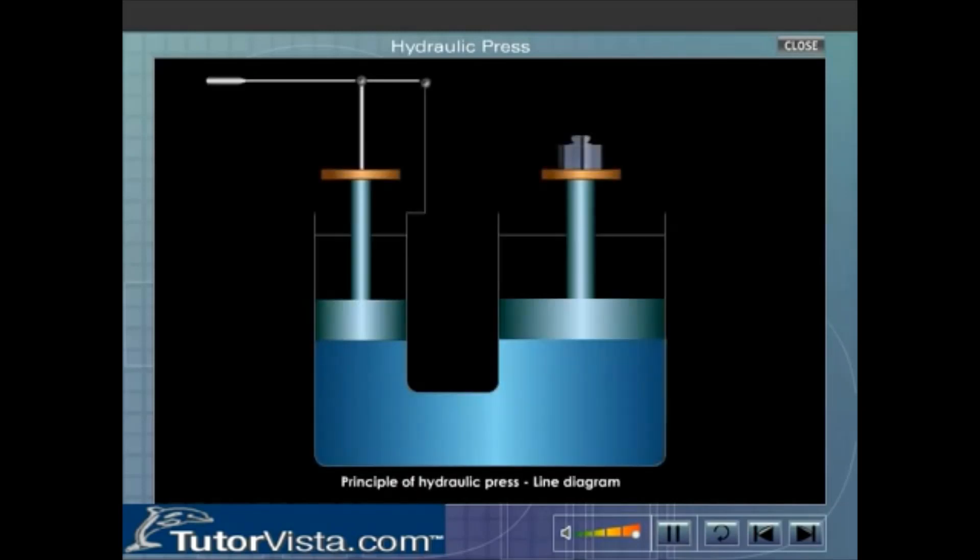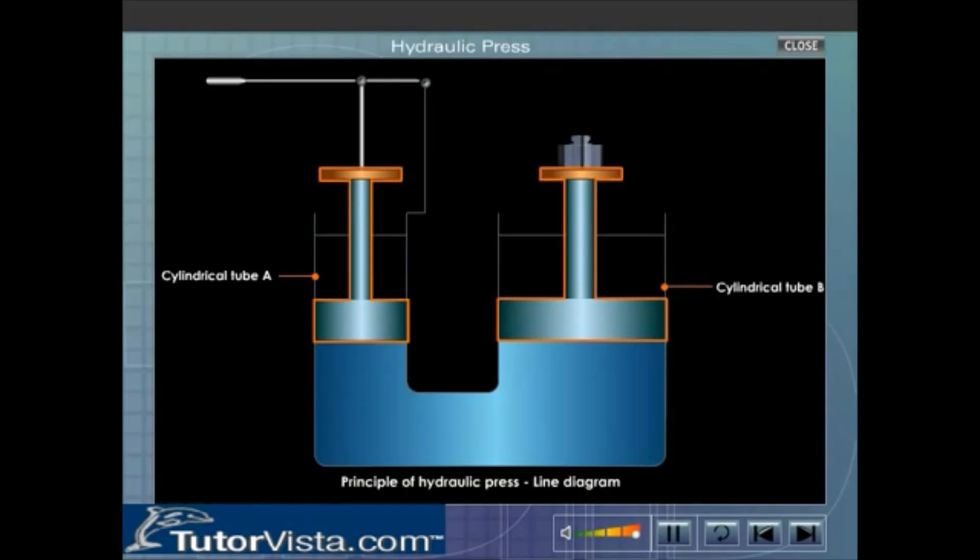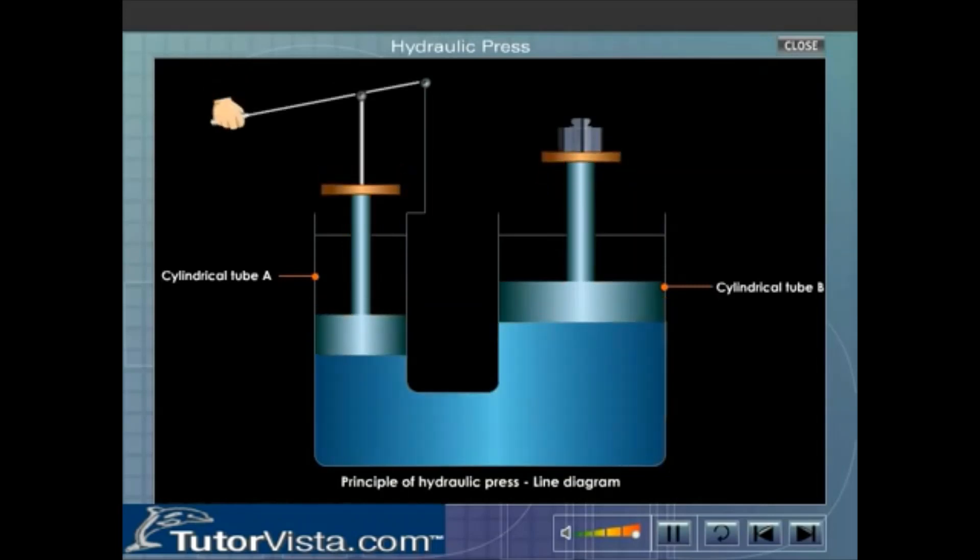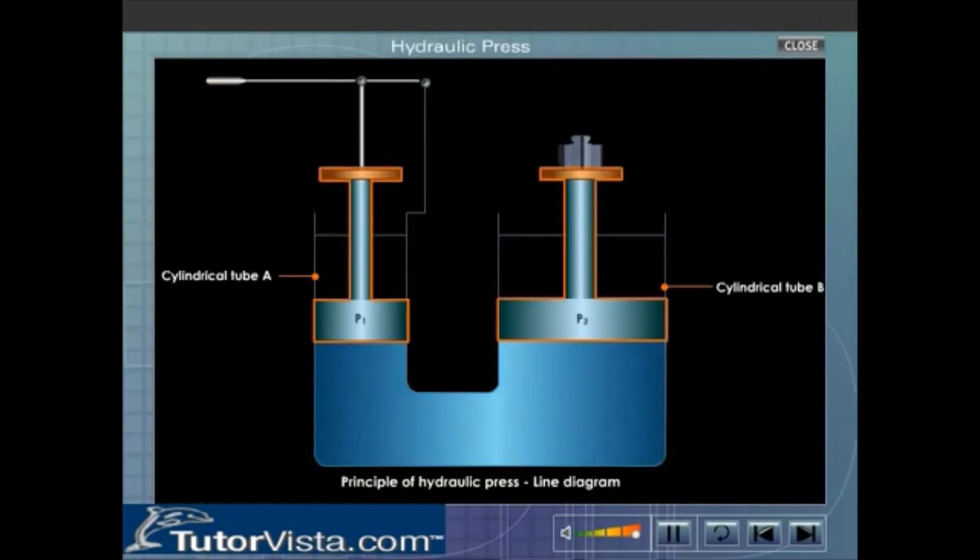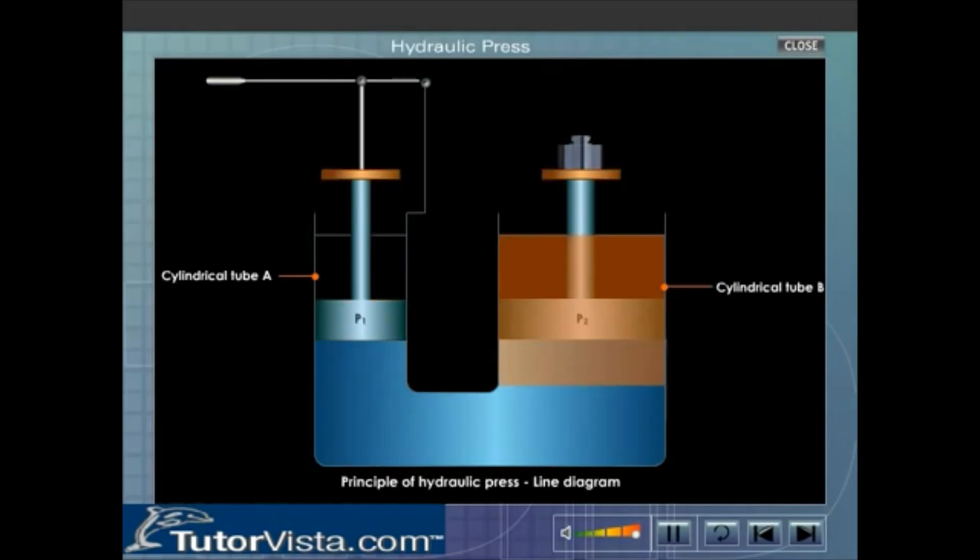In a hydraulic press there are two cylindrical tubes A and B of unequal area of cross sections fitted with valves V1 and V2. These cylindrical tubes are connected at the bottom by means of a horizontal tube. These cylinders contain watertight pistons P1 and P2 which can slide up or down within the cylinder. Observe that area of cross section of B is greater than that of A.